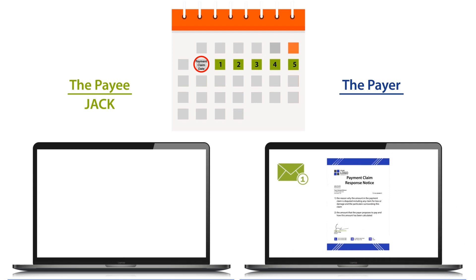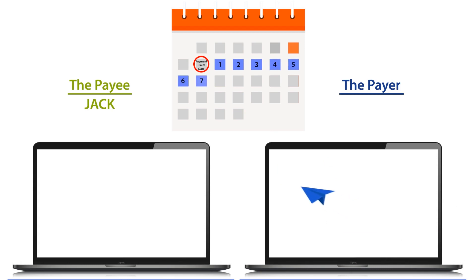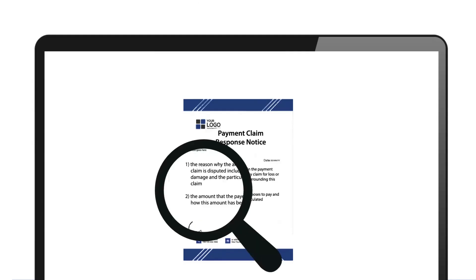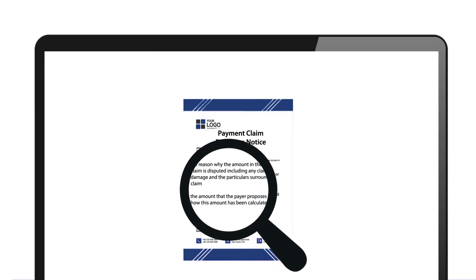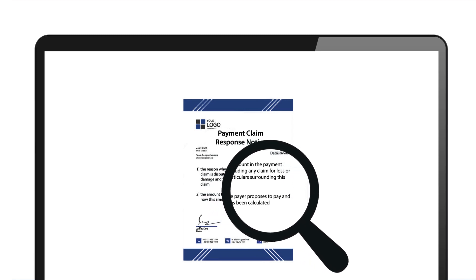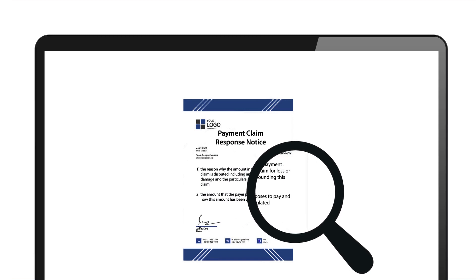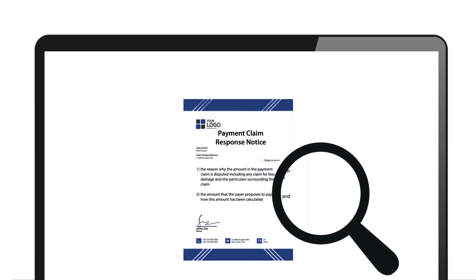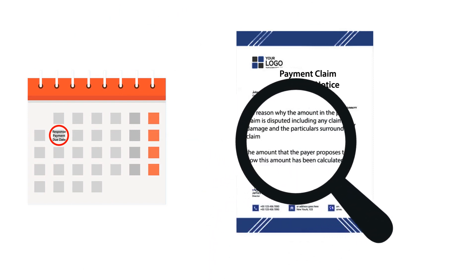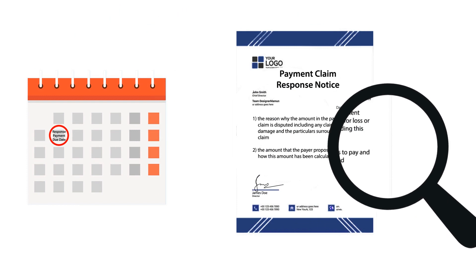If the payer does not agree with the amounts set out in the payment claim notice, they must respond within 21 days of the payment claim date by sending a payment claim response notice to the payee, setting out: 1. The reason why the amount in the payment claim is disputed, including any claim for loss or damage. 2. The amount that the payer proposes to pay and how this amount has been calculated. 3. If the amount has not been agreed by the date the payment is due, the payer shall pay the amount they have set out in their response.